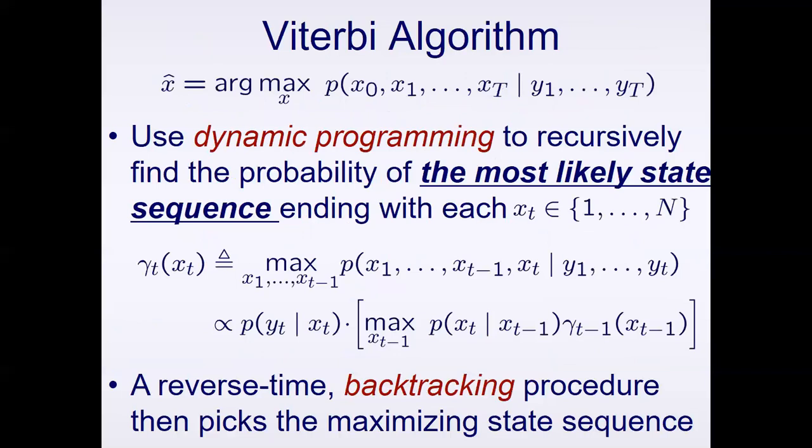It can be shown that given this optimization problem, our goal is to find an optimal sequence — and we can identify this optimal sequence in terms of optimal subsequences. Thus we can use dynamic programming, a very famous application referred to as the Viterbi algorithm. It simply says we can solve for the optimal sequence in terms of optimal subsequences using a simple reverse-time backtracking procedure, very similar to most dynamic programming solutions.